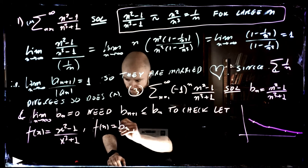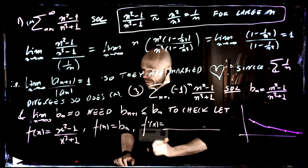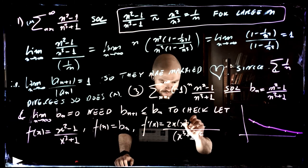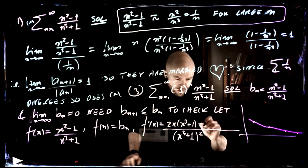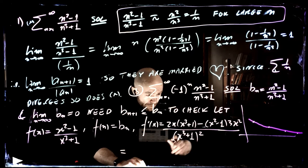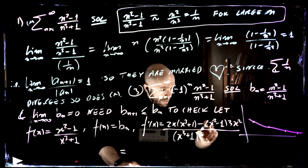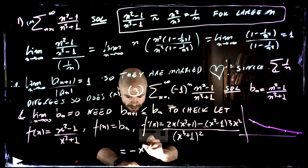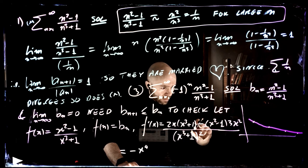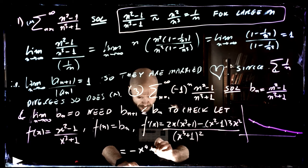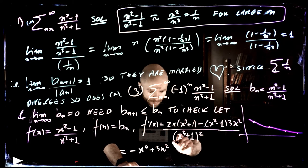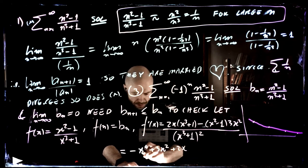So let's check the derivative using the quotient rule — everything over the bottom squared. Differentiate the top, leave the bottom alone, minus leave the top alone and differentiate the bottom. Let's collect the powers: we have 2x to the 4 here and minus 3x to the 4, giving minus x to the 4. The next power is x squared: we get plus 3x squared. Then a plus 2x. So the derivative expression has these terms.